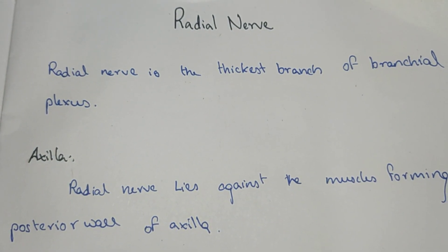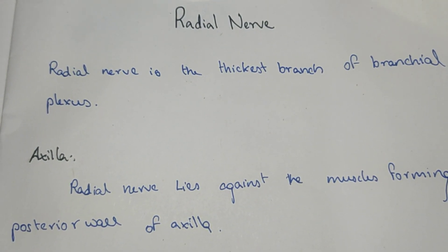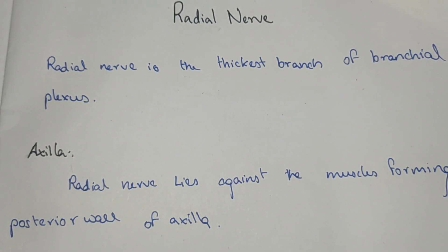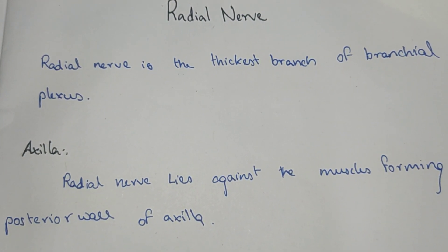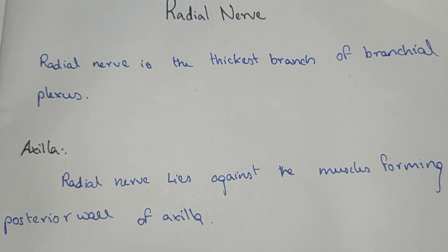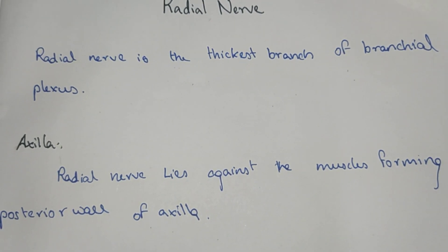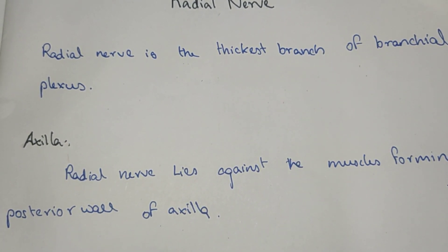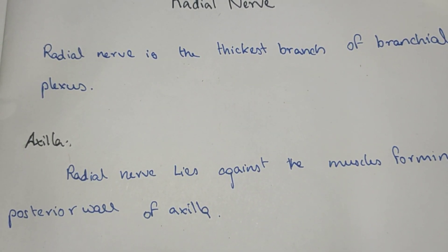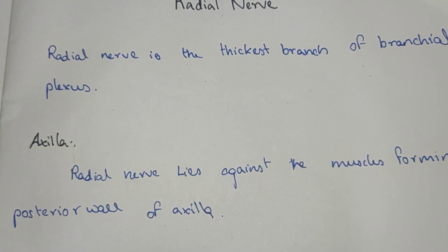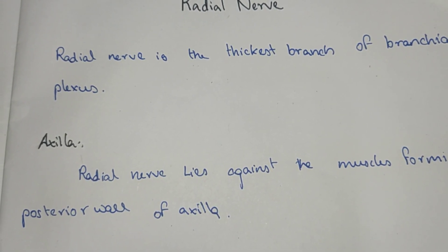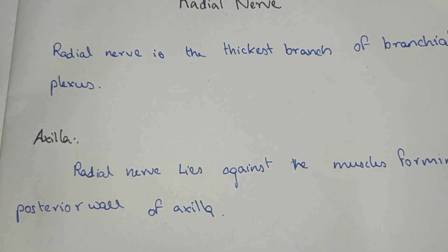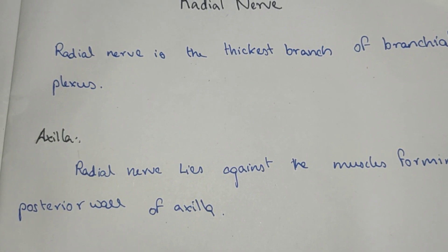Hi everyone, welcome to this YouTube channel. In this video we are going to see about the radial nerve. The radial nerve is the thickest branch of the brachial plexus. In the axilla, the radial nerve lies against the muscles forming the posterior wall of the axilla, and it supplies the upper part of the arm.